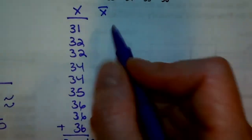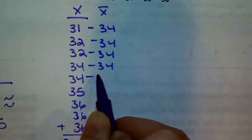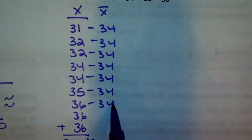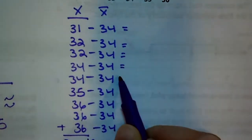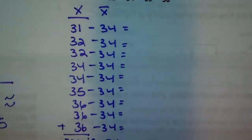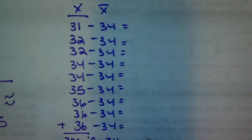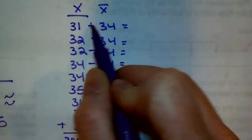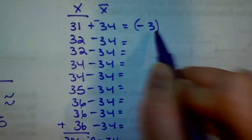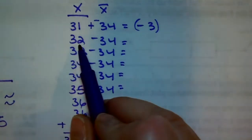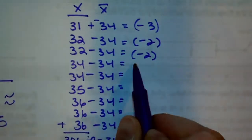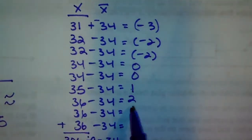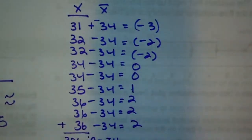Now take all the values and subtract 34 from them. 31 minus 34 gives negative 3, put in parentheses. 32 minus 34 is negative 2, and that happens again. 34 minus 34 is 0, another 0. Then we have 1, 2, 2, 2. At least these aren't crazy numbers to deal with.